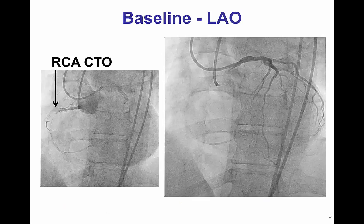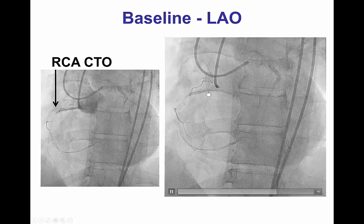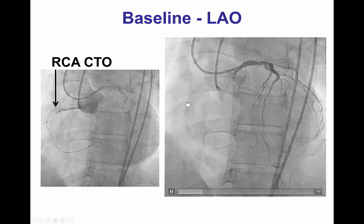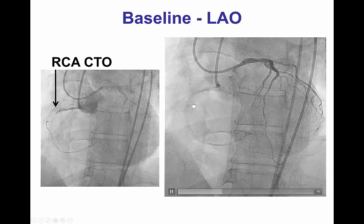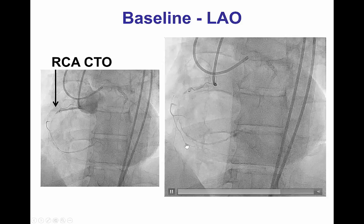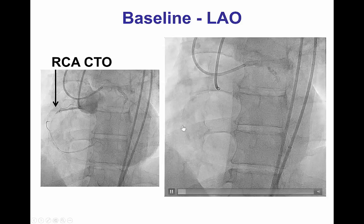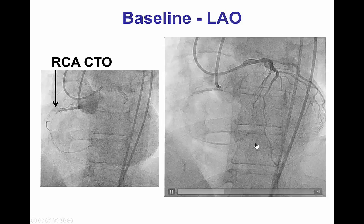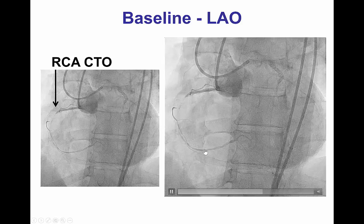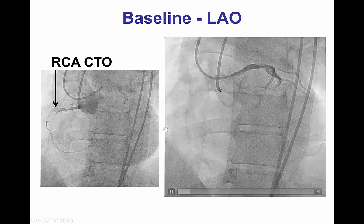The patient presented with a right coronary artery CTO. The occlusion had a well-defined proximal cap, there was severe calcification in the body of the occlusion, and the distal vessel was of good caliber. There were also some septal collaterals from the left anterior descending artery.